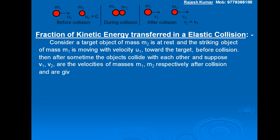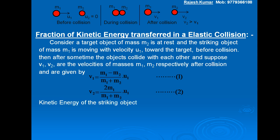V1 and V2 are given by: V1 = (M1 − M2) / (M1 + M2) × U1, let this be equation 1. And V2, the velocity of the target object after collision, is equal to 2M1 / (M1 + M2) × U1, let this be equation 2.